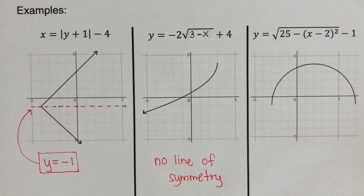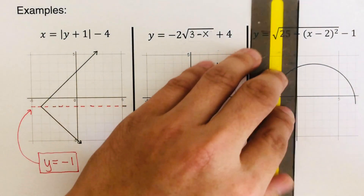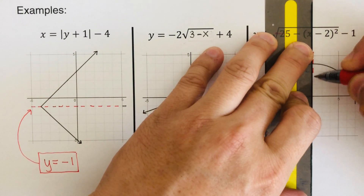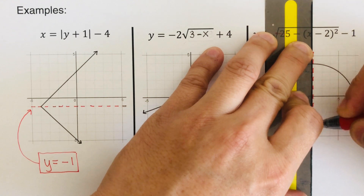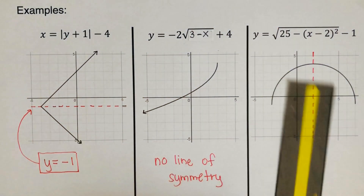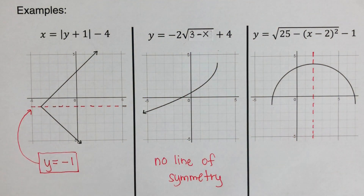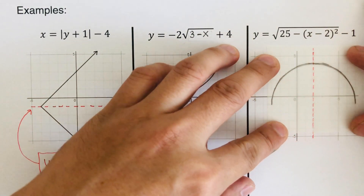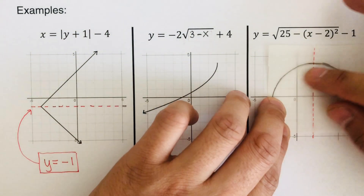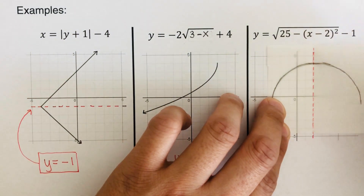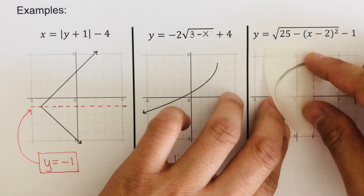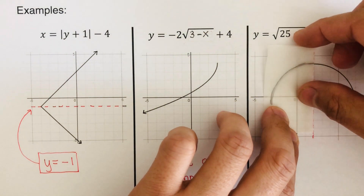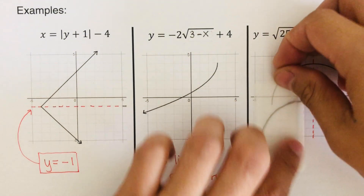The line of symmetry for this next graph is here at this line right here. We can go ahead and verify this using the patty paper. If we were to match up with the original picture and fold on the line of symmetry, then both sides would match up, meaning it was divided exactly into two identical halves.